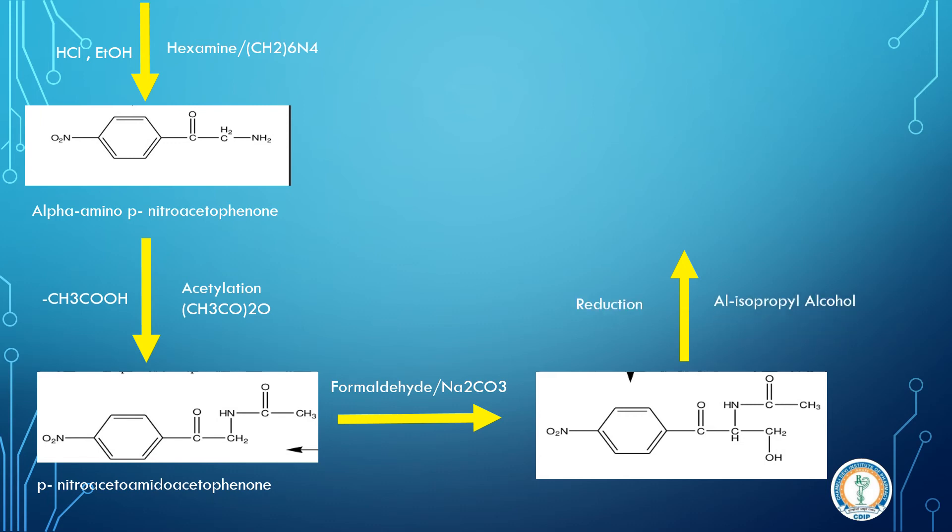The reduction will be carried out with aluminum isopropyl alcohol. So what happens, the keto group changes to alcoholic group. This forms a mixture of dextro and levo form.